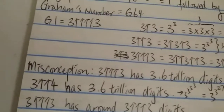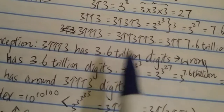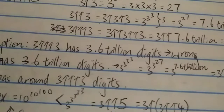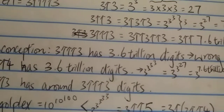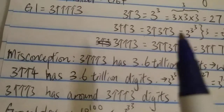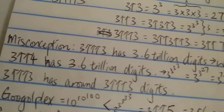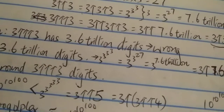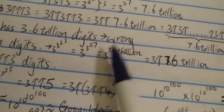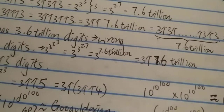A common misconception — which some people in comments argue, partly from a Numberphile video they've since corrected — is that 3 ↑↑↑ 3 has 3.6 trillion digits. That's wrong. The number that actually has 3.6 trillion digits is 3 ↑↑ 4, which is 3 to the 3 to the 3 to the 3 with four 3s, equal to 3 to the power of 7.6 trillion.